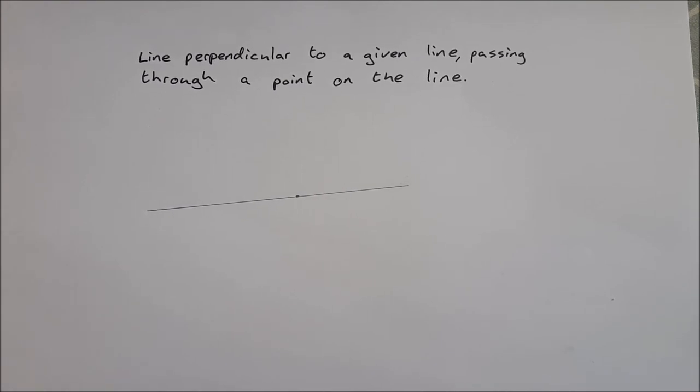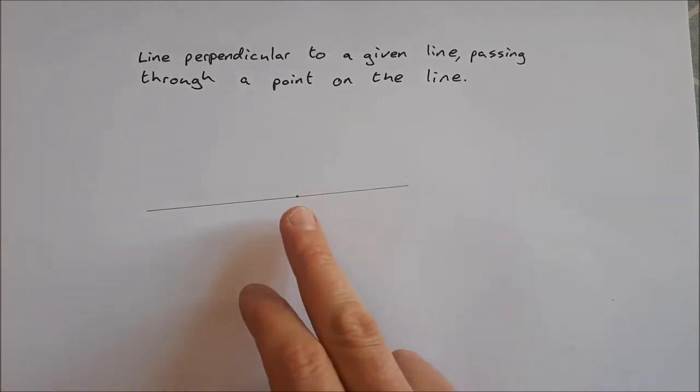In this video I'm going to do construction 4, which is to draw a line perpendicular to a given line passing through a point that is on the line.